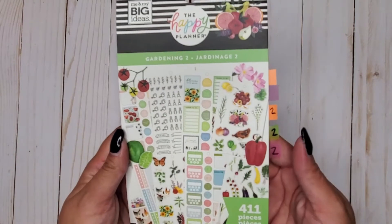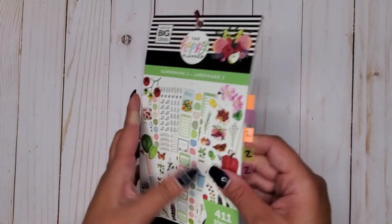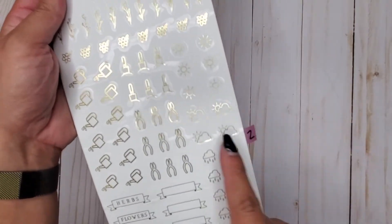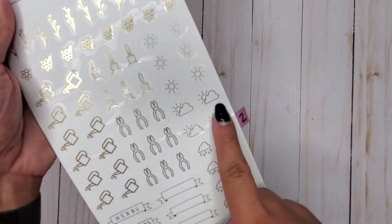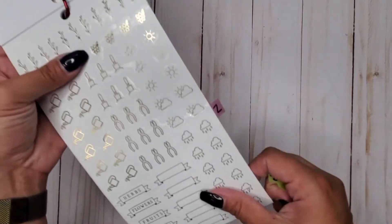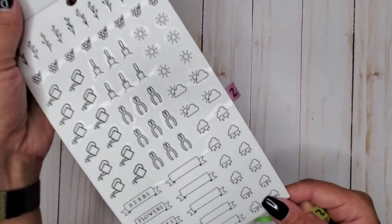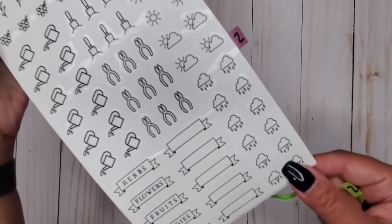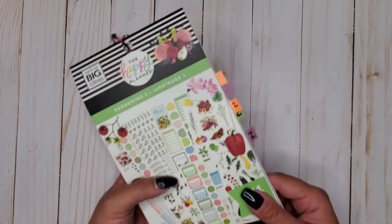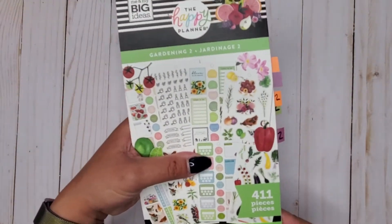Then I have gardening 2 for 11. In here these are gold foil but we do have our little suns, we have our clouds with the sun behind it, rain, thunderstorm. We do get two pages, but the second page is black but they are both clear. So that's gardening 2 for 11.